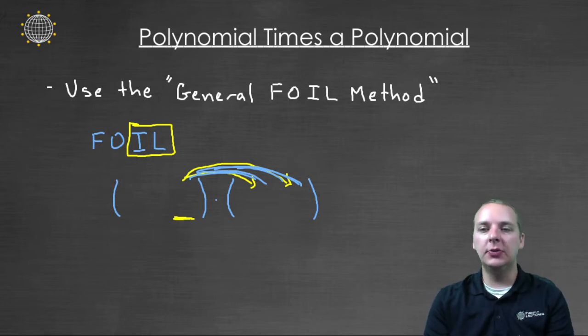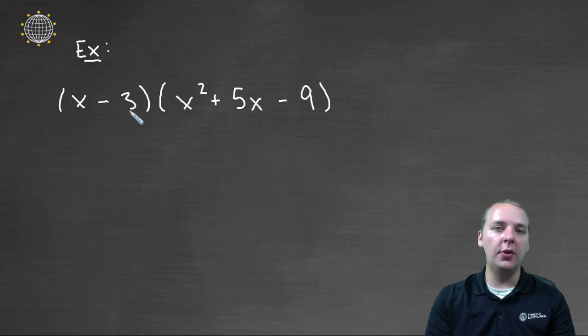So this is really best understood as if we walk through an example. So let me walk you through this example. Here we have x minus three which is a binomial times x squared plus five x minus nine which is a trinomial,